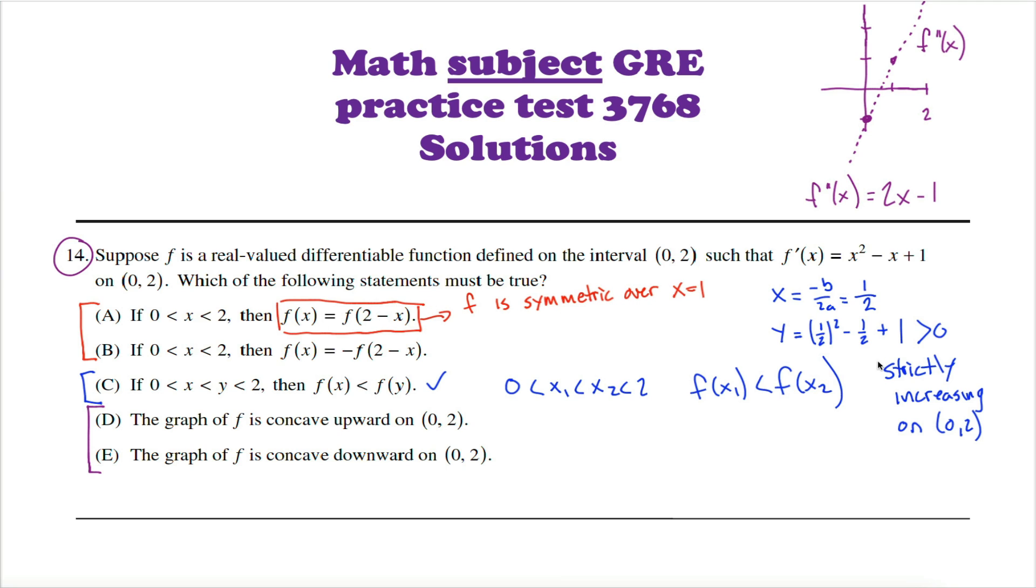This statement is just saying that my function is symmetric over x equals 1. Well, that can't possibly be the case because we've already figured out that my function is strictly increasing on this interval. So if it's always increasing from 0 to 2, how can the height at 1 half be the same as the height at 1 and a half? Can't be. That's a false statement.